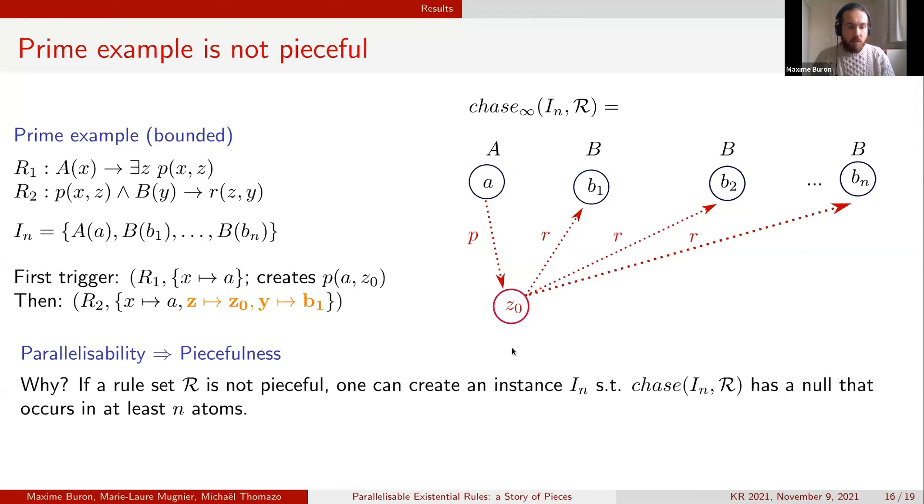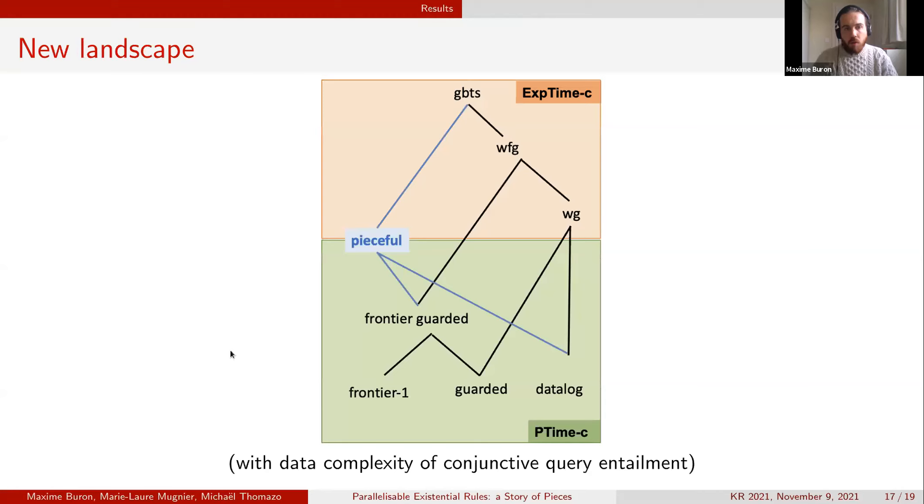What is interesting with this prime example is that it can be extended and generalized to any set of rules that are not peaceful. It allows us basically to show that parallelisability implies peacefulness.